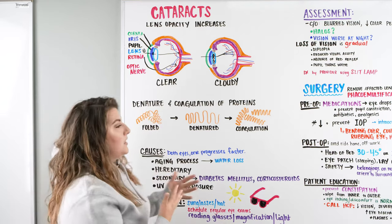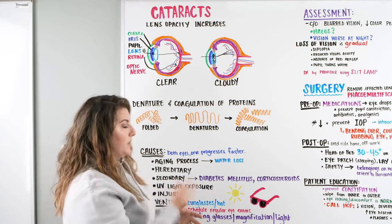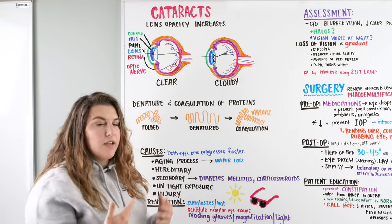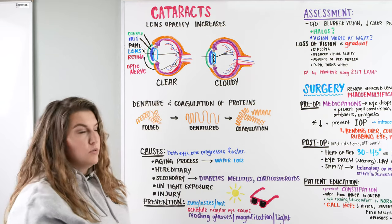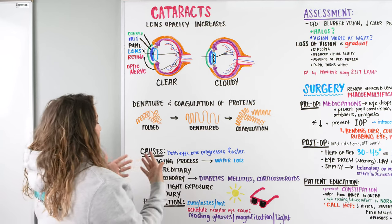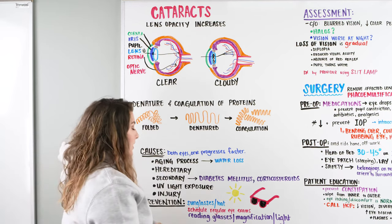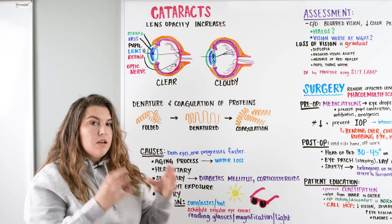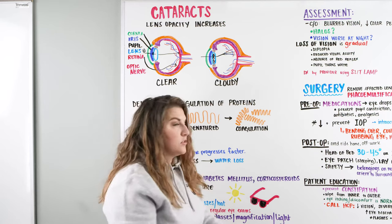Now we're seeing cloudy or blurry vision and we need to think about prevention. If a patient at a routine eye exam mentions blurry vision, that could be an early sign of cataracts. Prevention measures include wearing sunglasses or a hat to shade from UV light, scheduling regular eye exams, wearing reading glasses or using magnification such as a magnifying glass or large print books, and ensuring adequate lighting when reading.